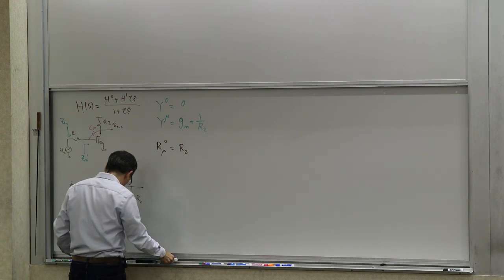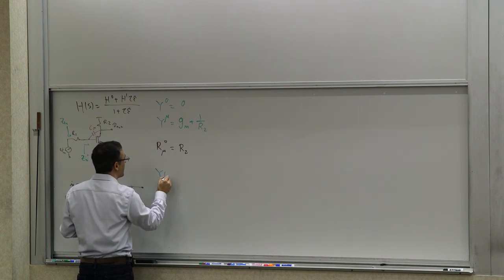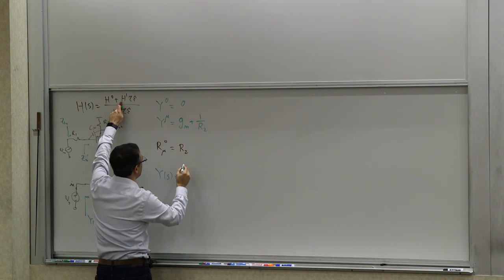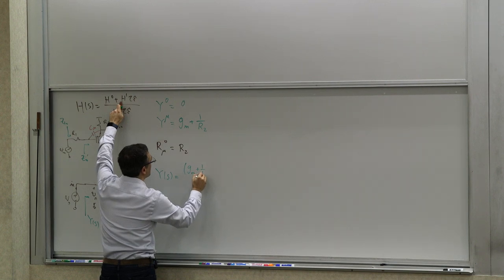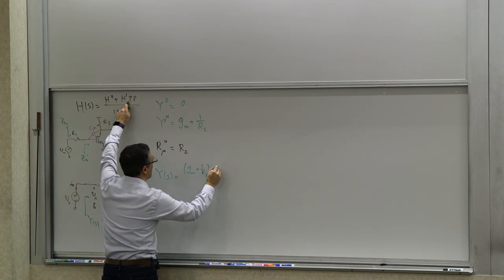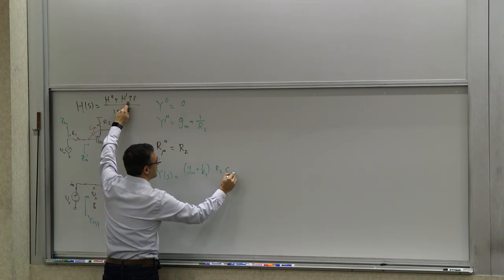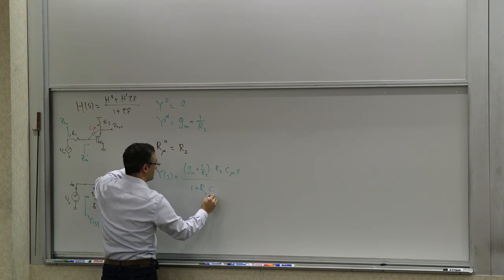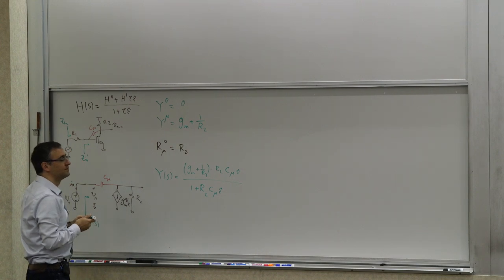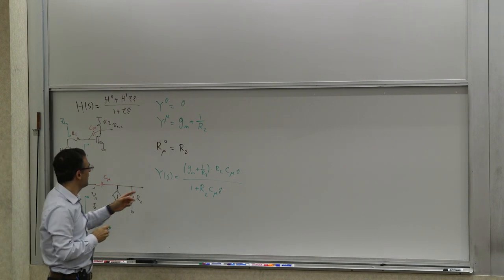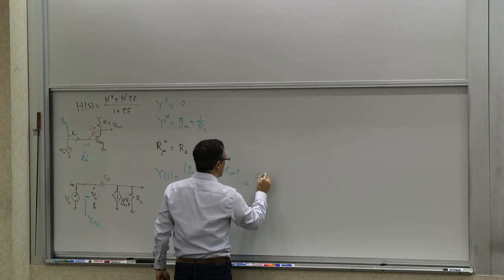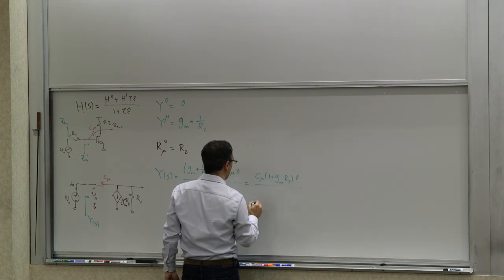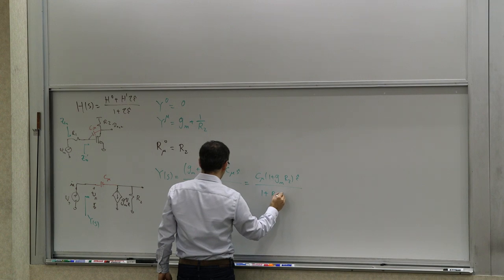So we have three simple parameters. Y(s) = Y0 + (Gm + 1/R2)·R2·Cmu·s / (1 + R2·Cmu·s). Since Y0 = 0, R2 cancels, giving Y(s) = Cmu·(1 + Gm·R2)·s / (1 + R2·Cmu·s).